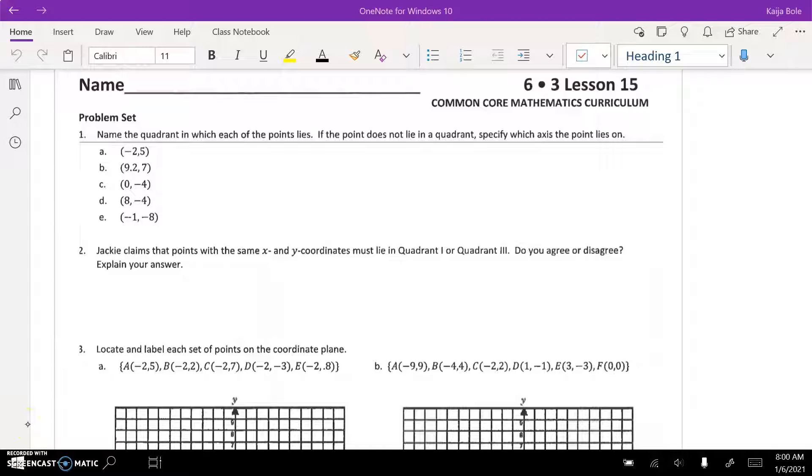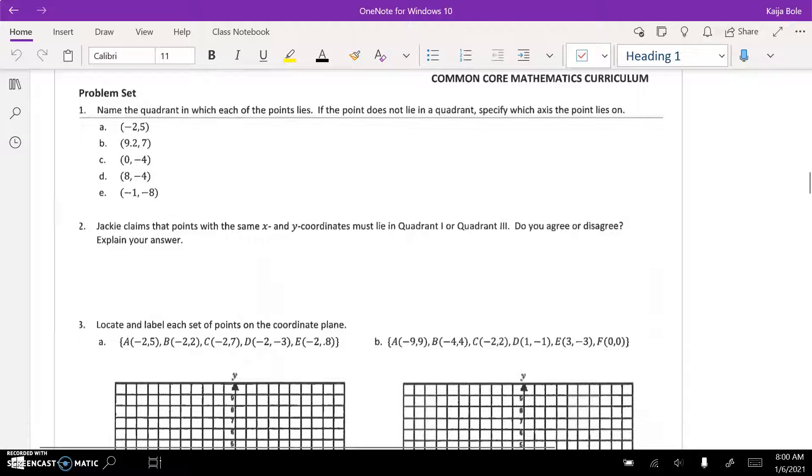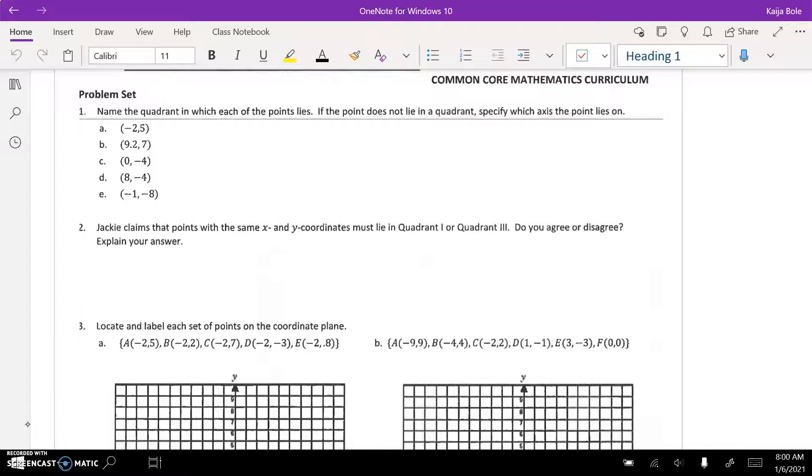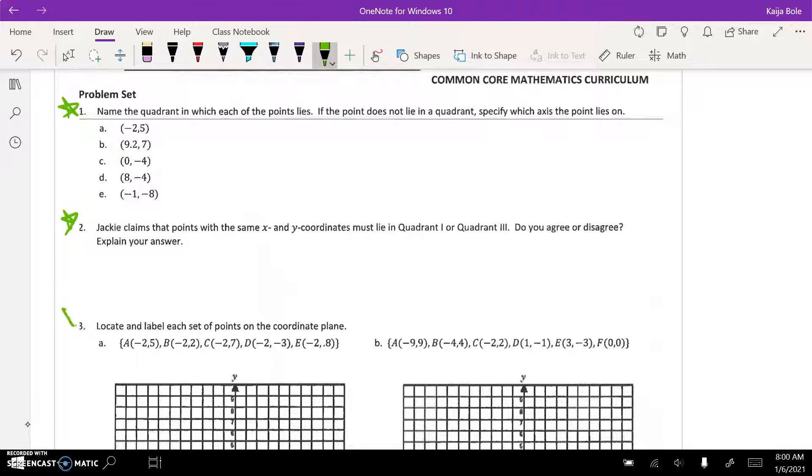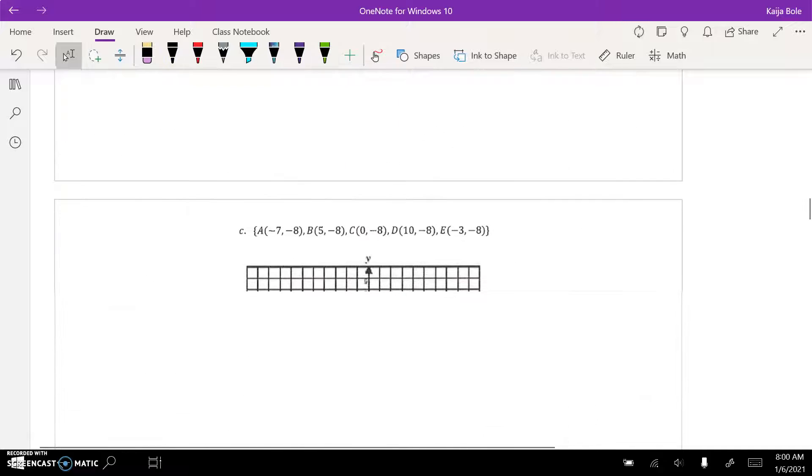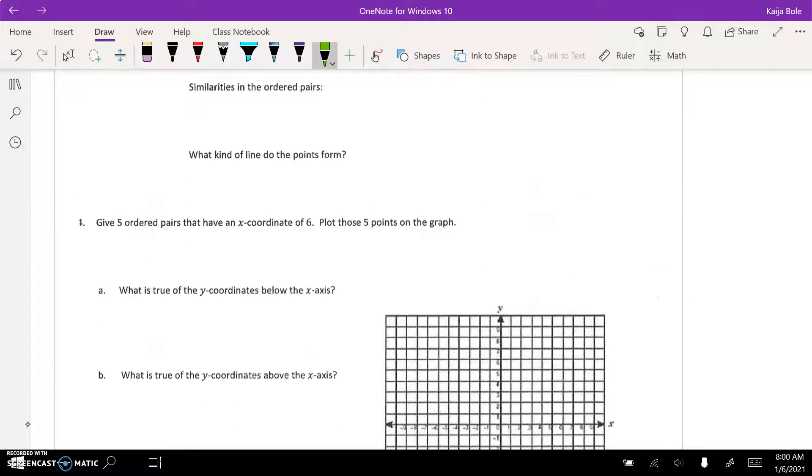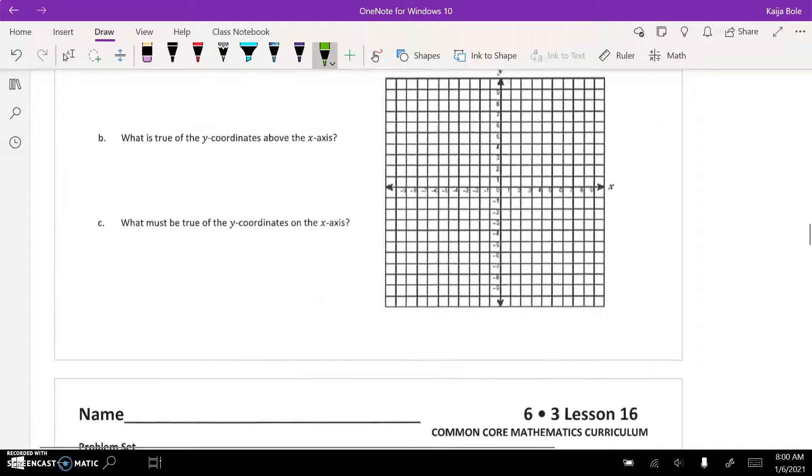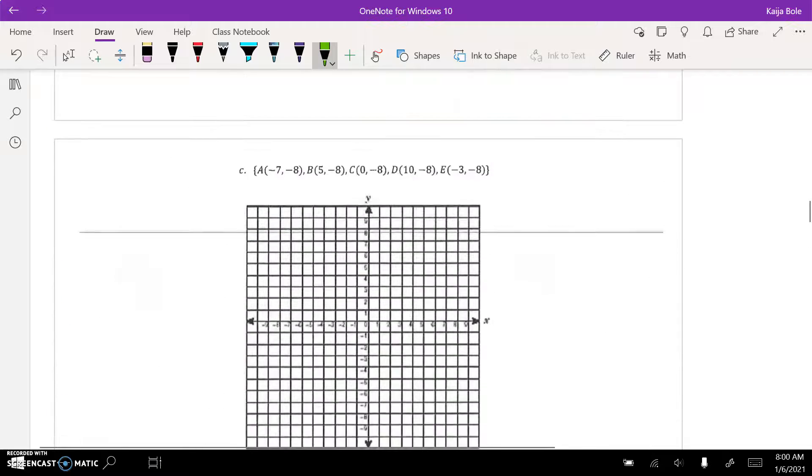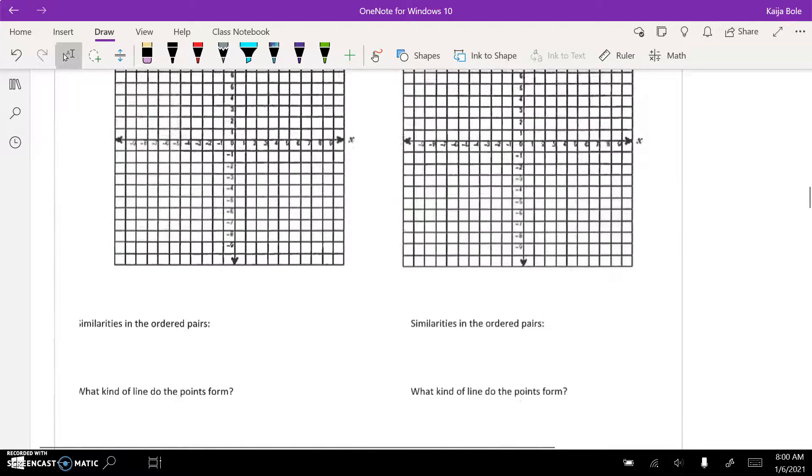Alright, here we are on the classwork for 3.15 and the goal for today is to do 1 through 4. So 1, 2, and 3 are on the first page and then on the second page that's still more three and this is four. So you're doing all of it, okay? But it's pretty straightforward so it shouldn't be too scary.